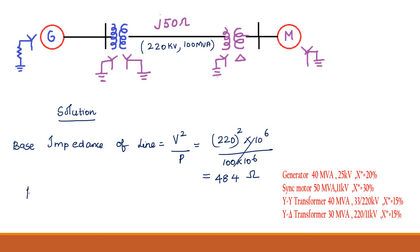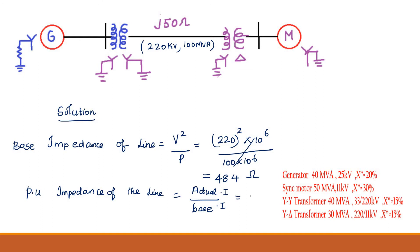Next, I am going to find out the per unit impedance of the transmission line. Per unit equals actual value divided by base value. The actual impedance given is J50 ohm, divided by the base impedance of 484 ohm. So, the answer is J0.1033 per unit. These are the per unit values for the transmission line.